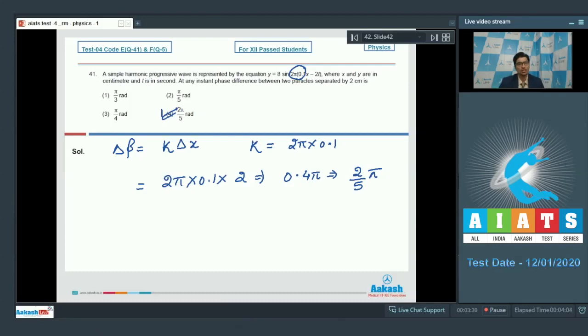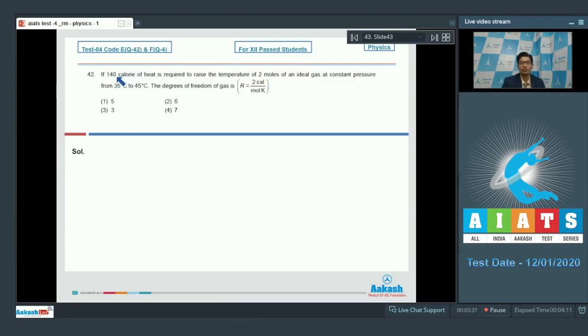Now, let us proceed to question number 42. Question number 42 says 140 calorie of heat is required to raise the temperature of 2 moles of an ideal gas at constant pressure from 35 degree Celsius to 45 degree Celsius. The degrees of freedom of the gas is.